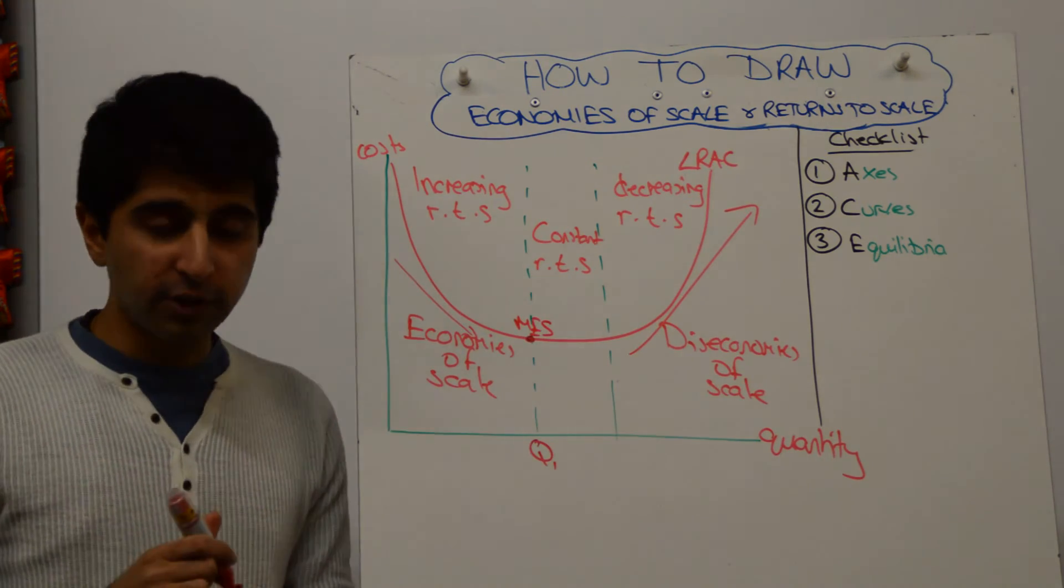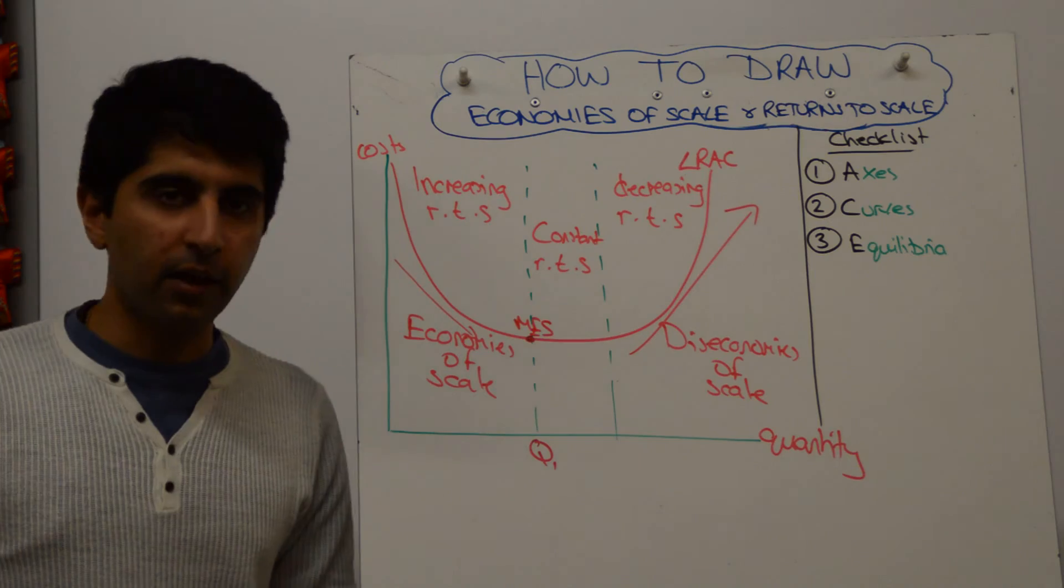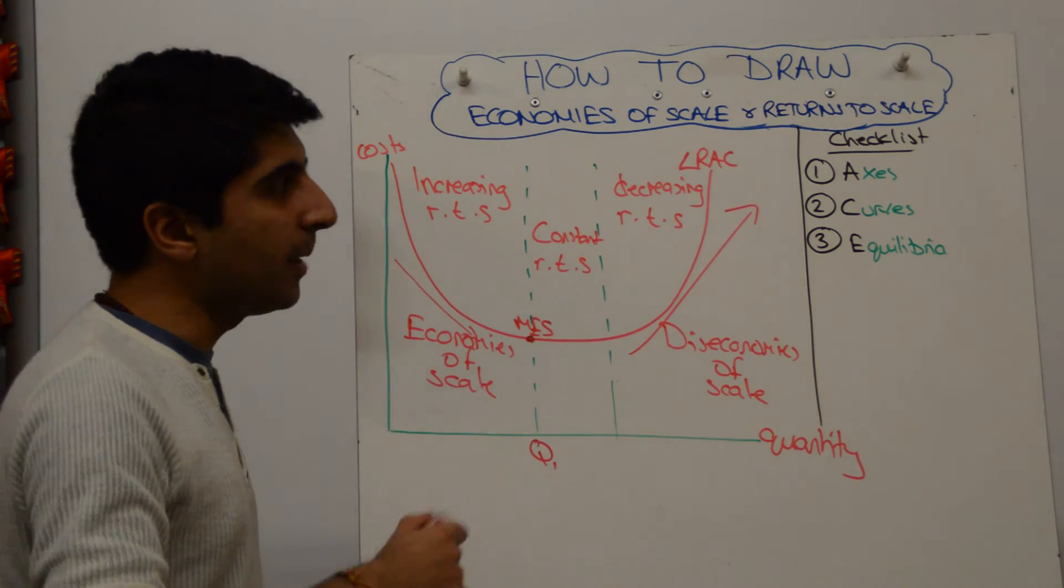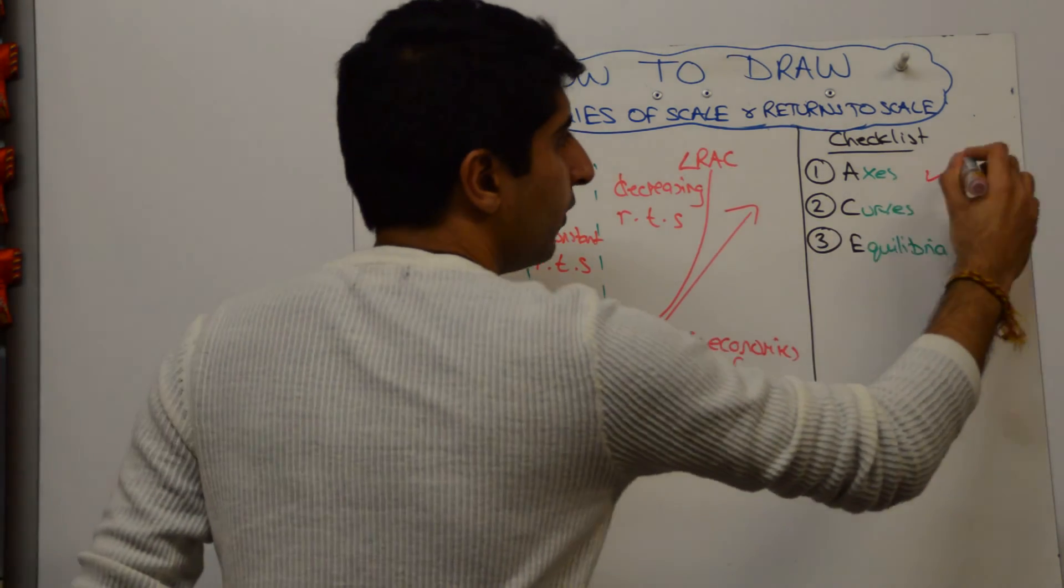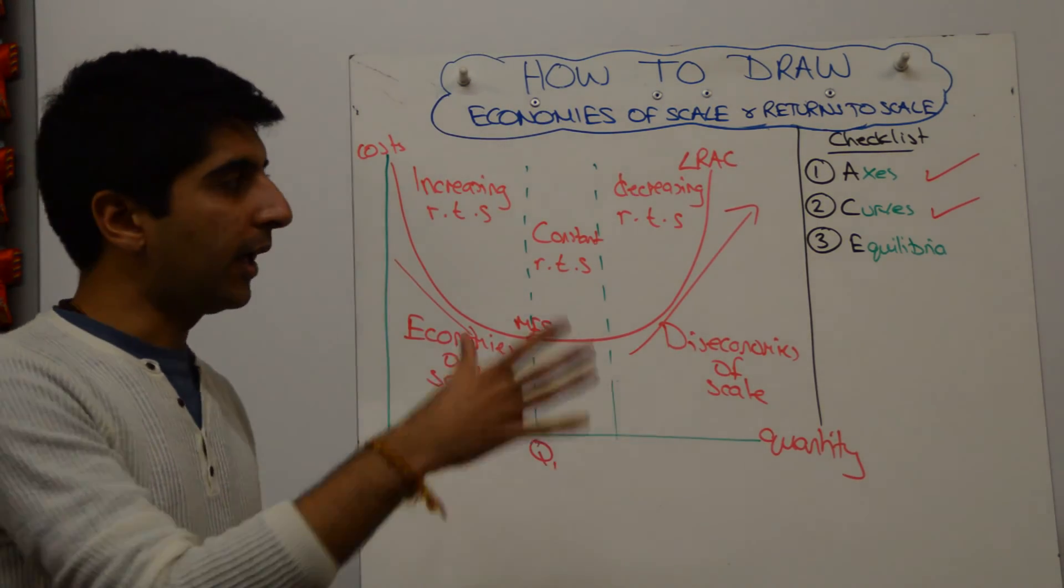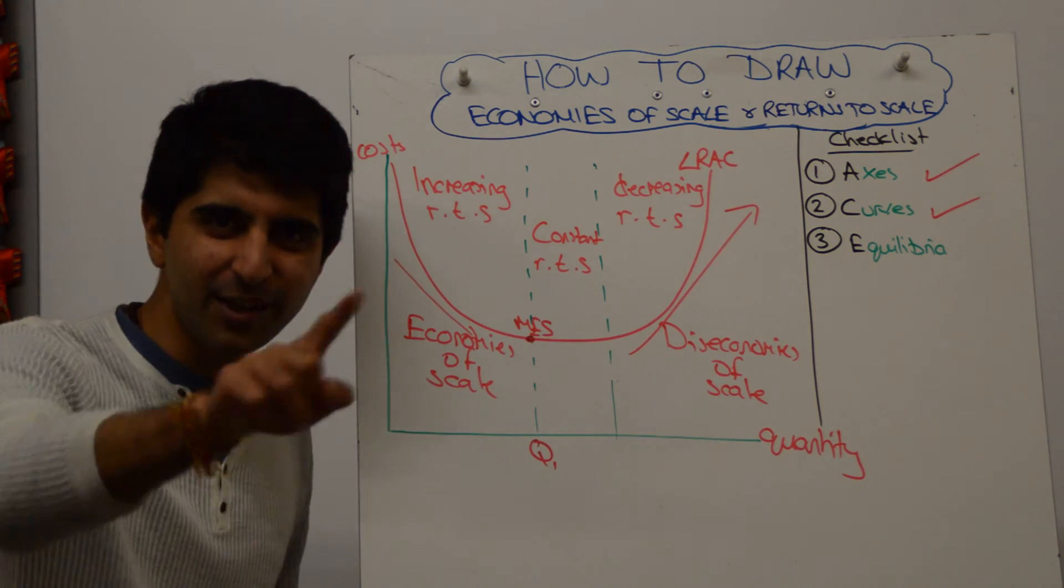I've seen a question like this come up before in the exam. If you need to show economies of scale or returns to scale, this is the diagram you need to draw. We've labeled our axes and curves. There's no equilibrium here, so the ACE diagram, as we're used to, has been fulfilled as much as we can do. Thanks for watching, see you in the next video.